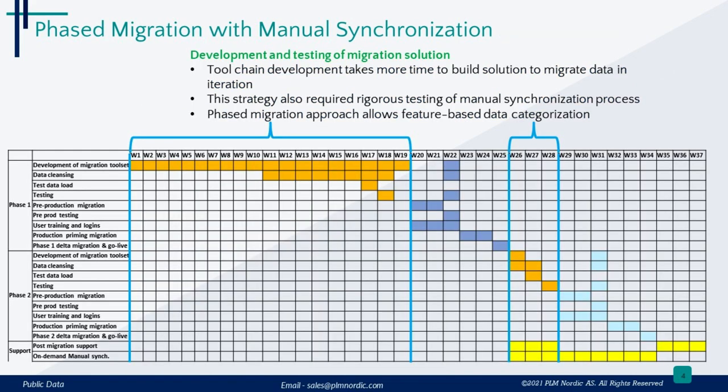We will be talking about stages of migration and their timeline using the same sample data selected for all the strategies, to illustrate the differences, pros and cons in a simplified manner. Everything discussed in this section is either in comparison or in addition to the Big Bang strategies.